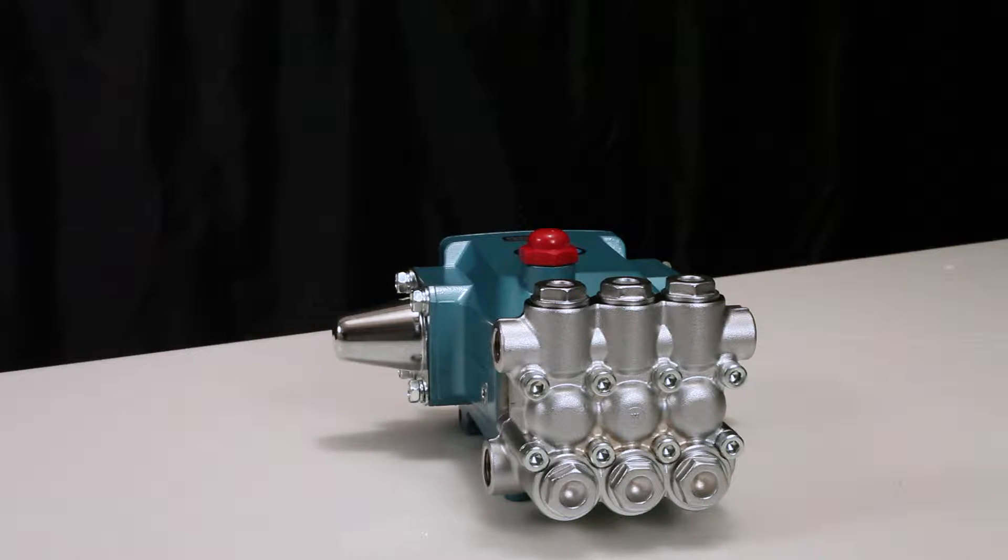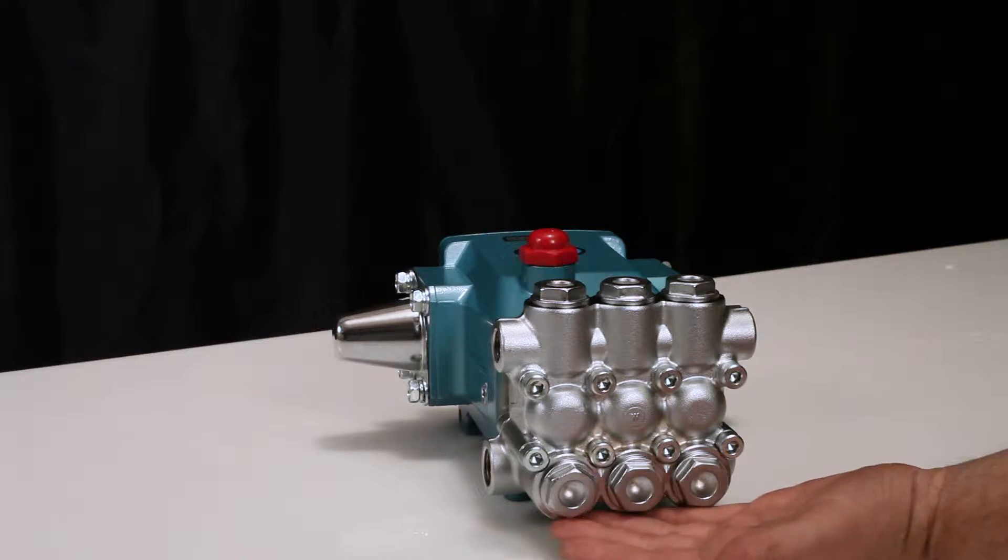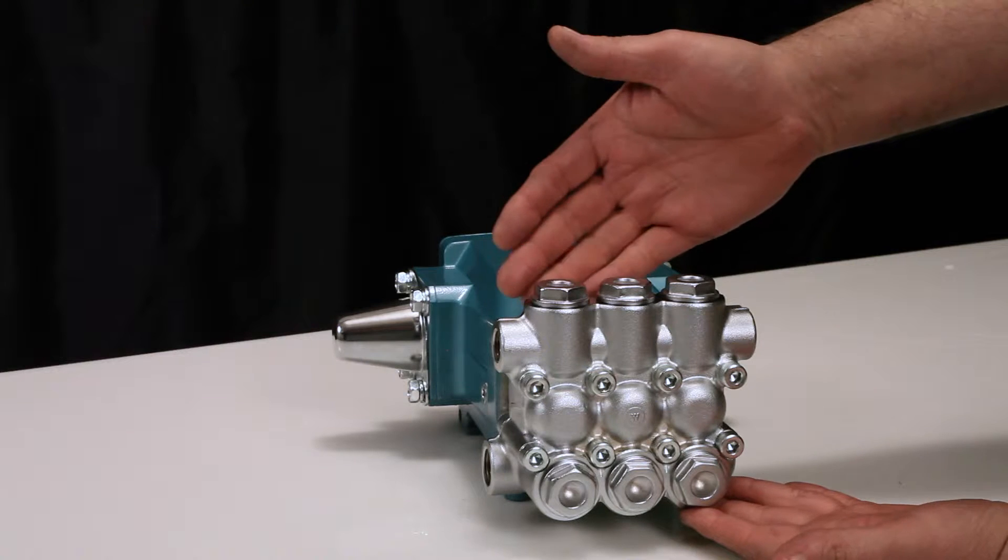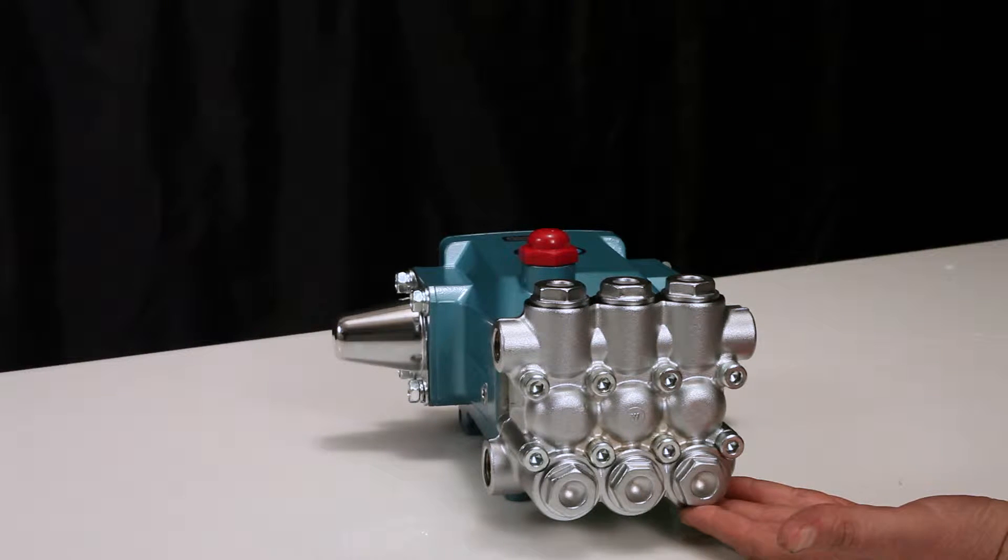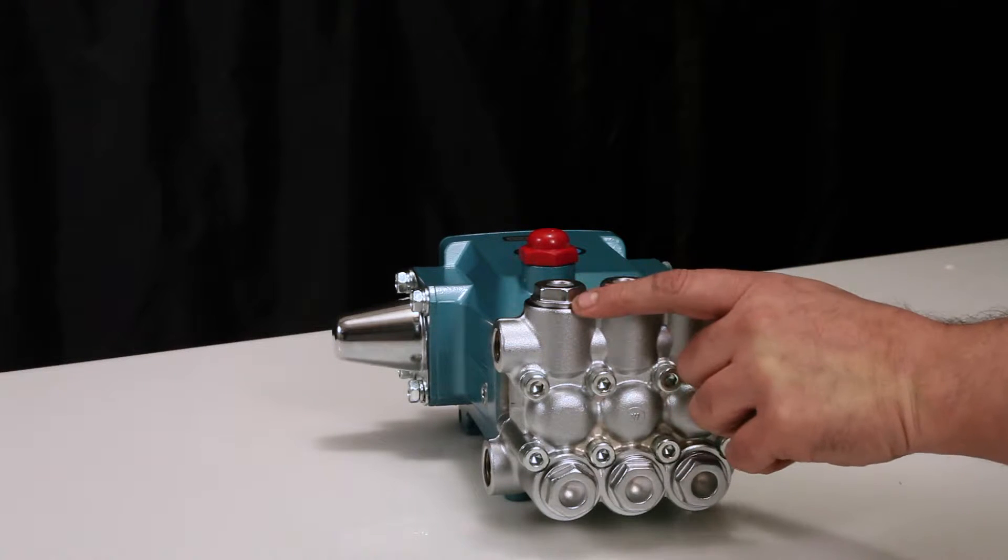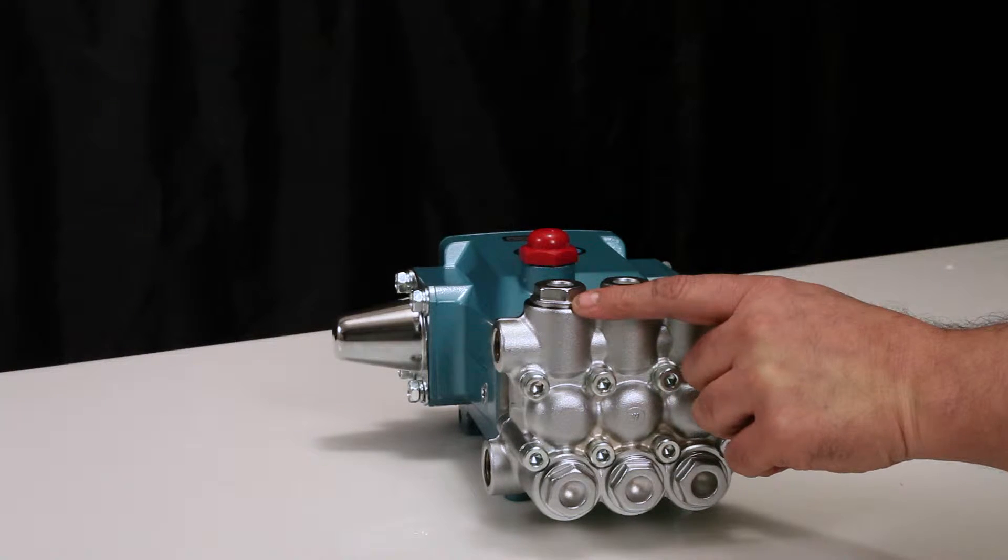The 5CP plunger pump contains two sets of valves. The valves located on the front of the manifold are the inlet valves. The valves located on the top of the manifold are the discharge valves. Both the inlet and discharge valve assemblies are identical. Two valve assemblies are required to service the pump.